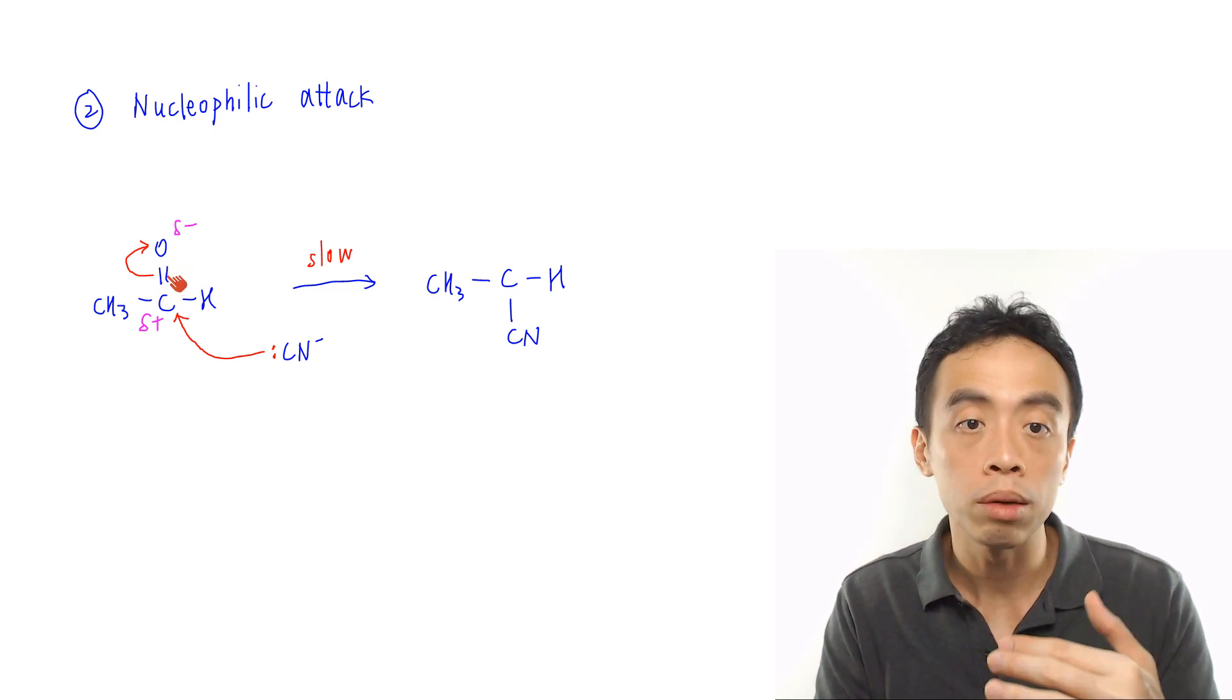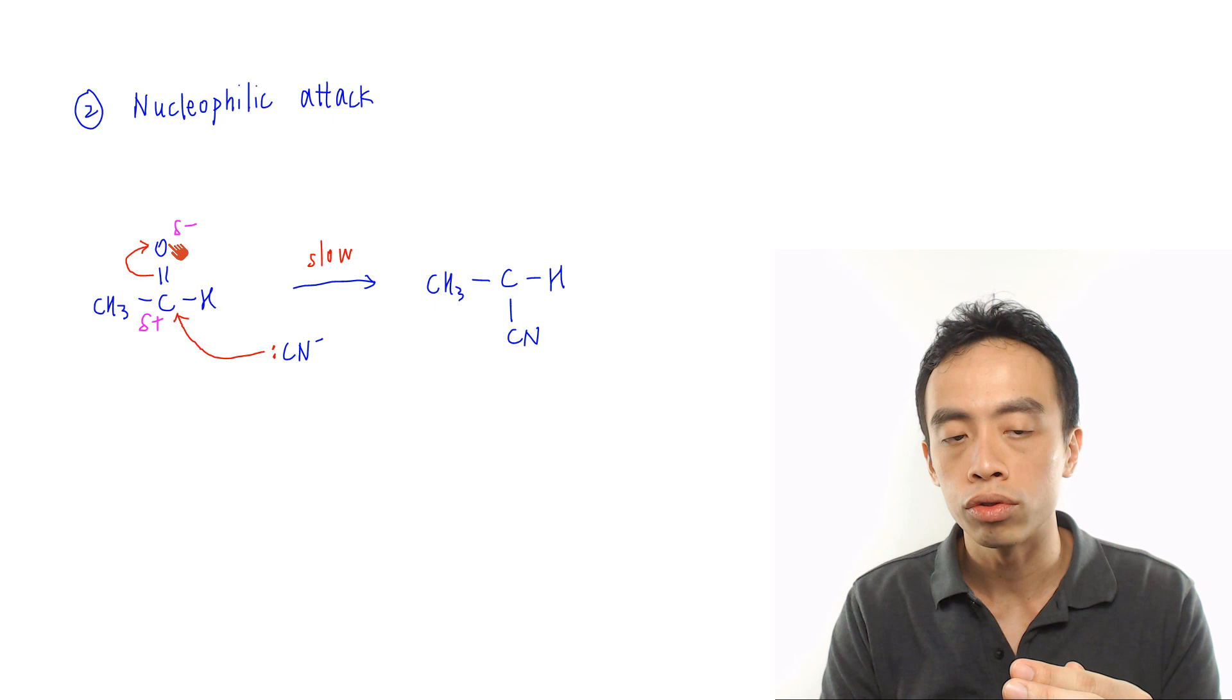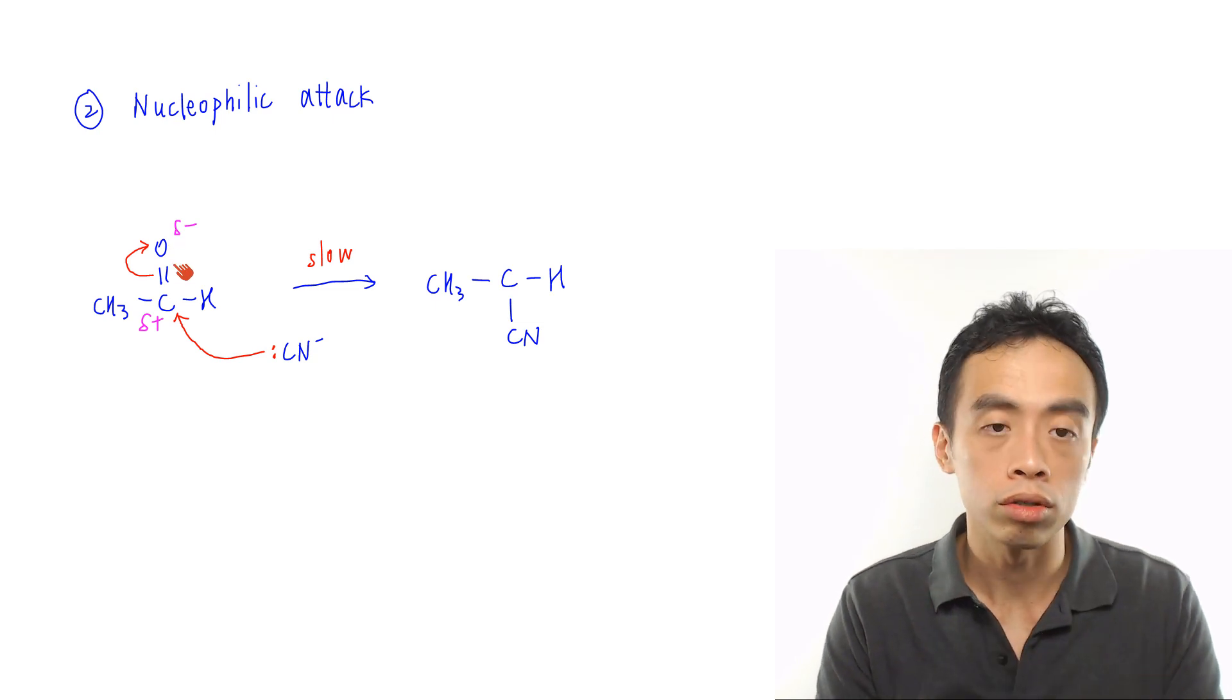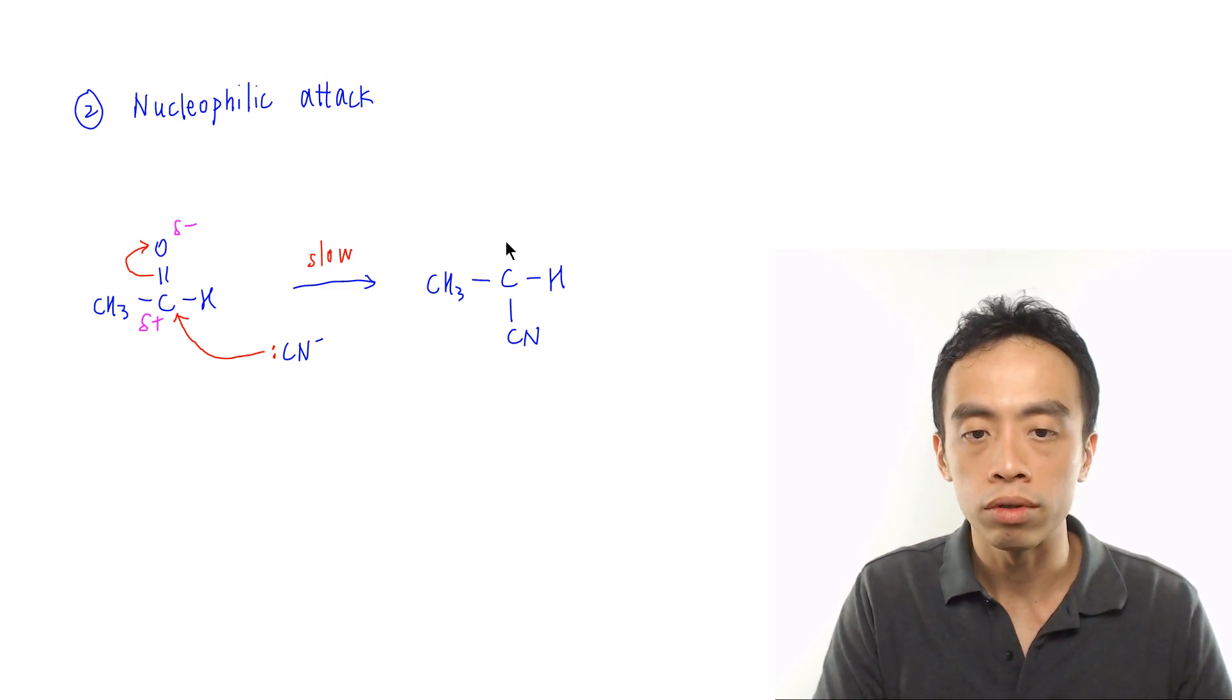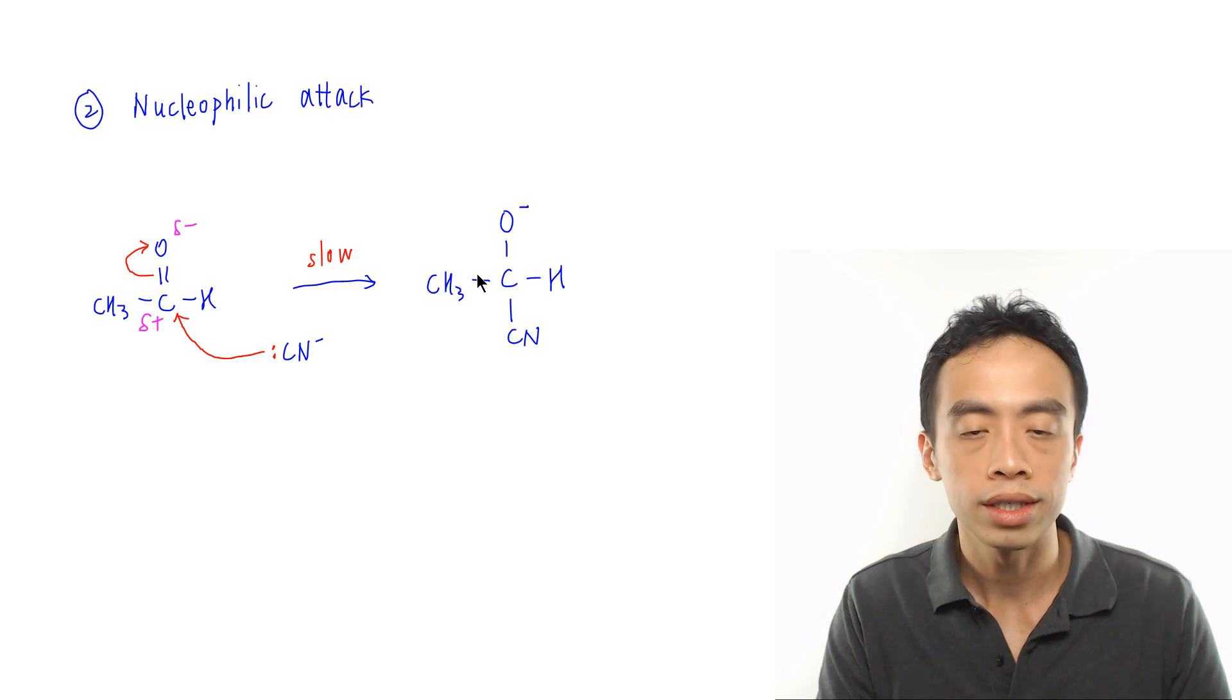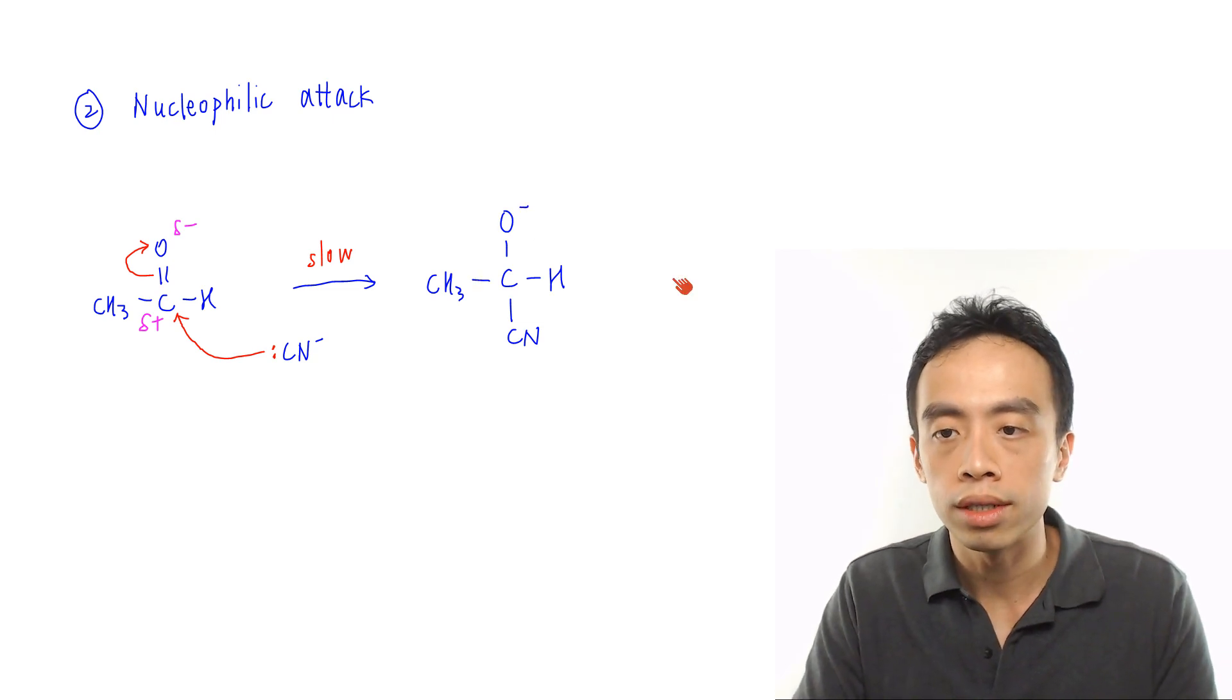This C double bond O, because the pi bond will break, both electrons will go to oxygen. The negative charge will be passed on to oxygen. I'll end up with oxygen which is negatively charged. This is our intermediate.